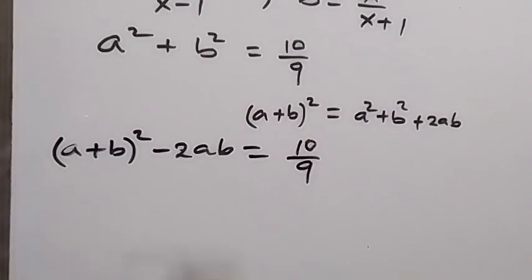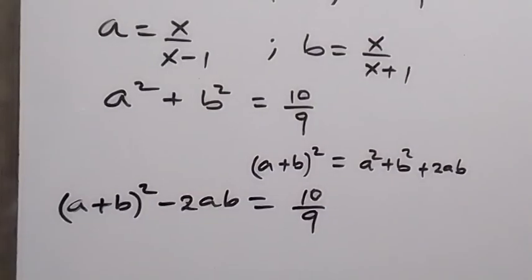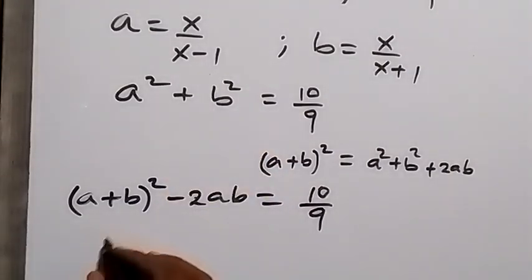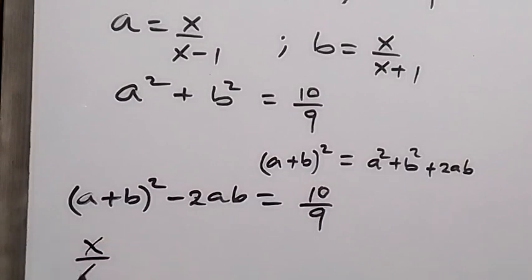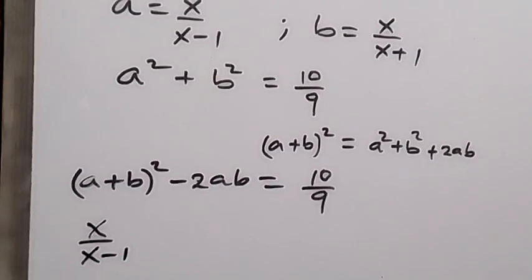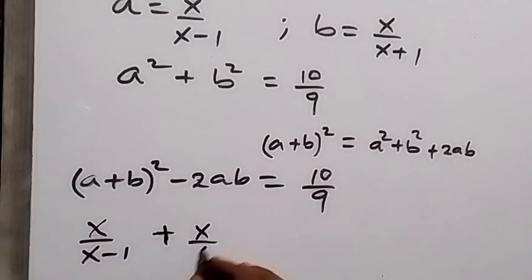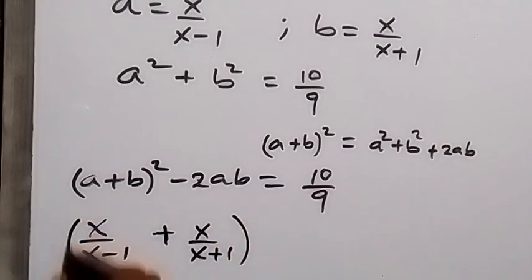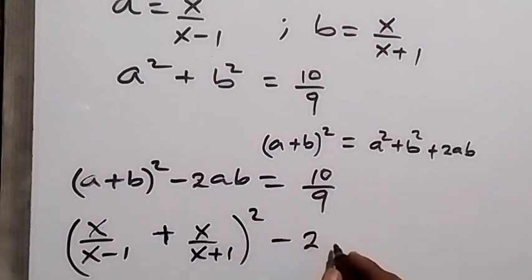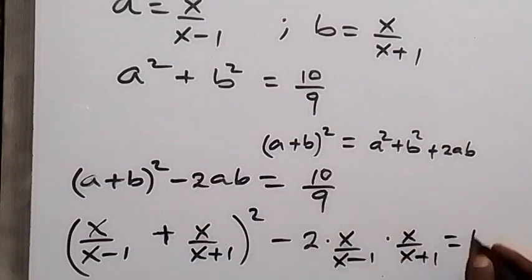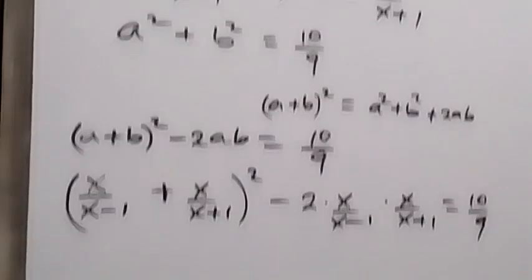Now substituting the values: a = x/(x-1) and b = x/(x+1). So we have (x/(x-1) + x/(x+1))² - 2 × (x/(x-1)) × (x/(x+1)) = 10/9.